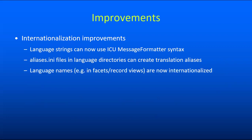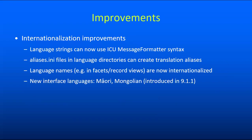We've also added support for translating the names of languages. So for example, in the record view where we display the language of a work or in the facets where we list by language values, all of those language names are now internationalized, whereas previously only the English versions of the names were displayed. Finally, we have a couple of new interface languages: Maori, which is a work in progress but significantly fleshed out in 10.0, and Mongolian, which was actually introduced in release 9.1.1 but wasn't announced in the what's new video.